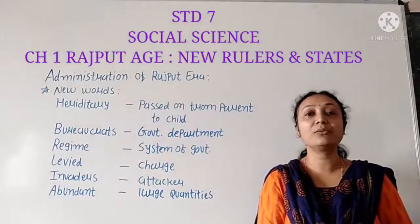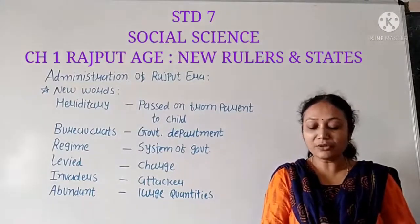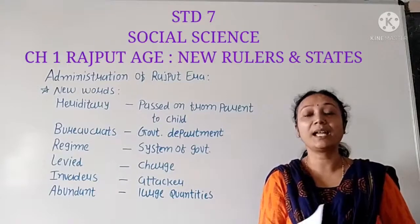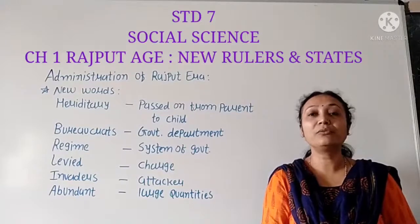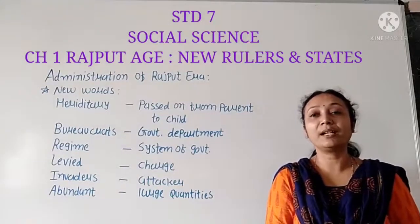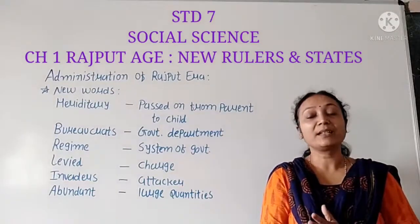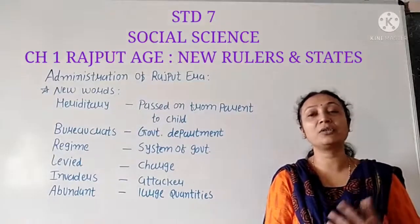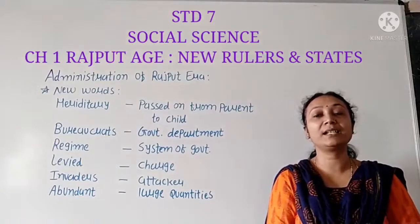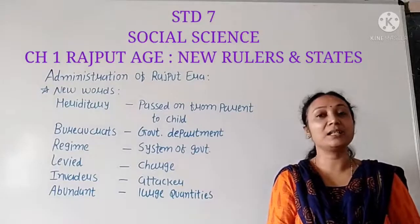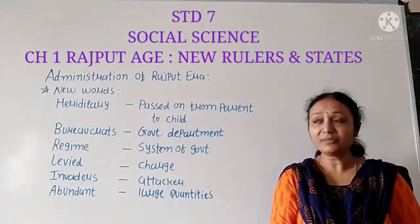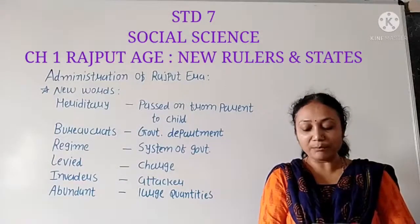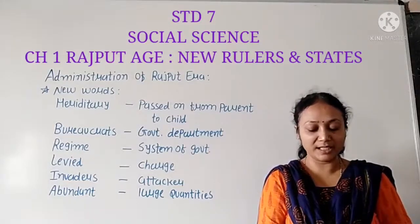The king used to make any one of his sons the Yuvaraj, or his successor, who would later become the king. If the king had three or four sons, he could choose who was most able to handle the kingdom. The king had authority to choose his son as Yuvaraj or successor. There are also instances — meaning examples — where courtiers used to elect or select the king of their choice.